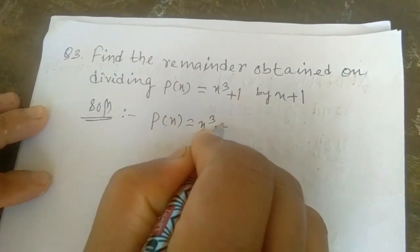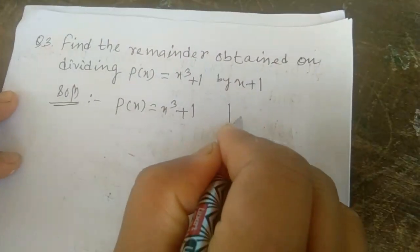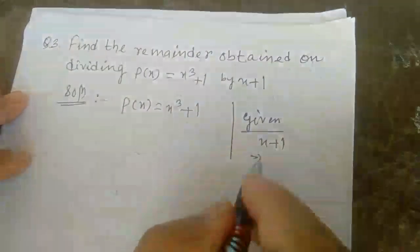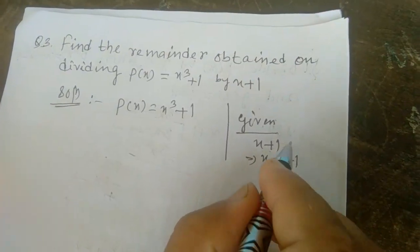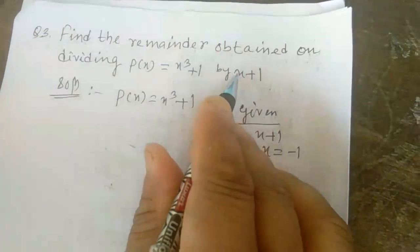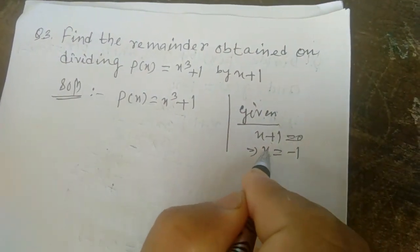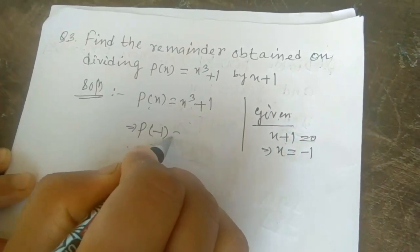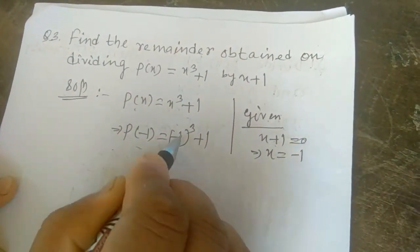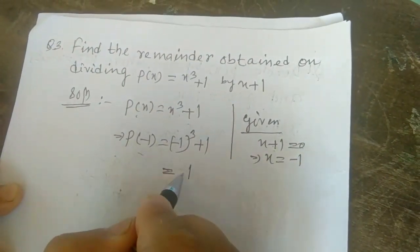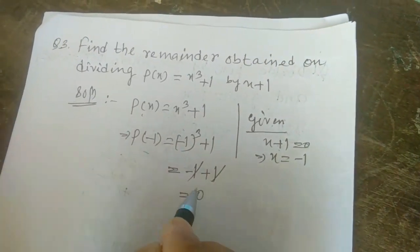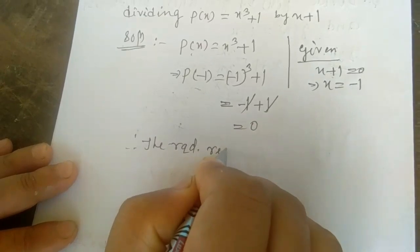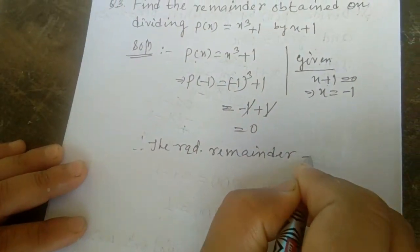p(x) = x³ + 1. The given part is x + 1. Since it is plus, if you transfer to the other side it becomes -1. So we take x + 1 = 0, which gives x = -1. Put this value of x into p(x): p(-1) = (-1)³ + 1. (-1)³ = -1, so -1 + 1 = 0. Therefore, the required remainder = 0.